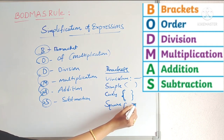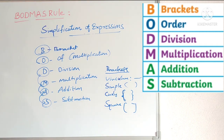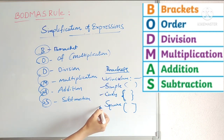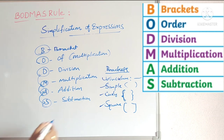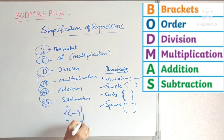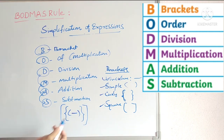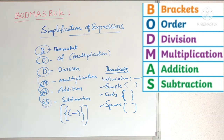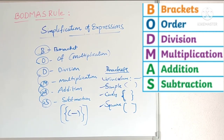If all four brackets are present in one problem, we follow this order and simplify from inner side to outer side. So the BODMAS rule is the order we follow in simplifying expressions: Bracket, Of, Division, Multiplication, Addition, Subtraction — in this order only.